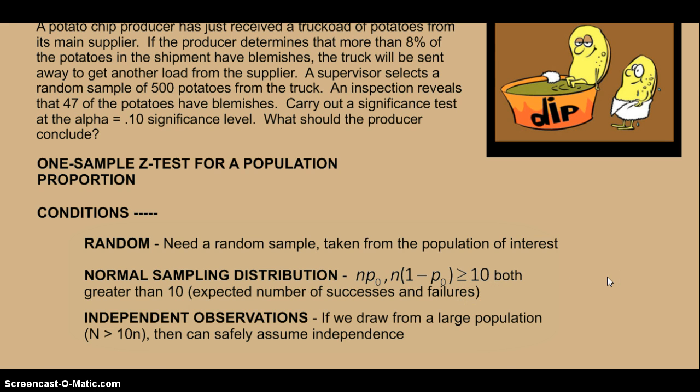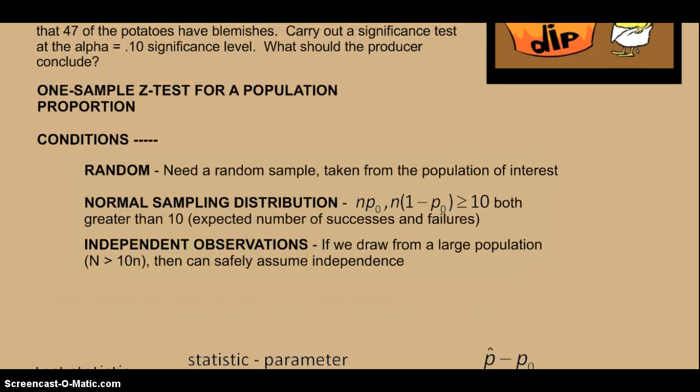We also need independent observations. And just like before, if we draw from a large population, the population being greater than 10 times the sample, then we can safely assume independence. So not all that different than what we were doing with confidence intervals.